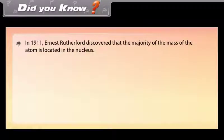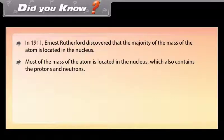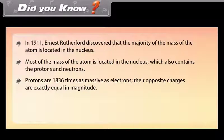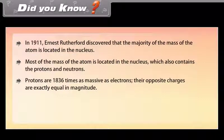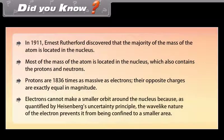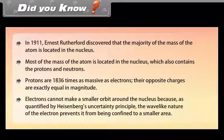Did you know: in 1911, Ernest Rutherford discovered that the majority of the mass of the atom is located in the nucleus, which also contains the protons and neutrons. Protons are 1836 times as massive as electrons, though their positive charges are exactly equal in magnitude. Electrons cannot make a smaller orbit around the nucleus because, as quantified by Heisenberg's uncertainty principle, the wave-like nature of the electron prevents it from being confined to a smaller area.